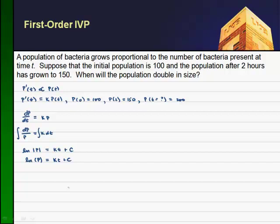And if we exponentiate both sides, we finally get out our function P of T is equal to e to the KT plus C.